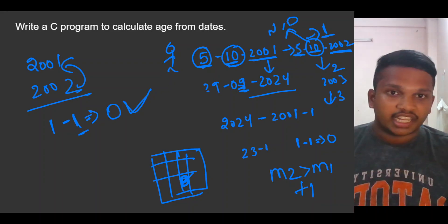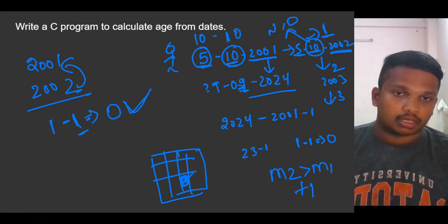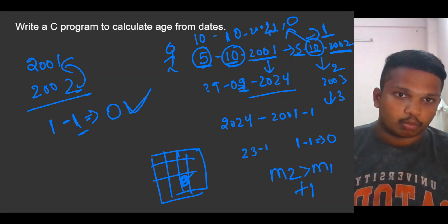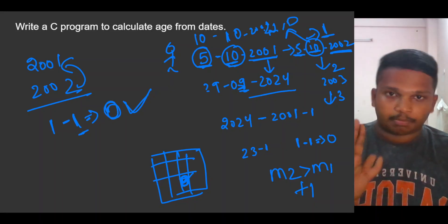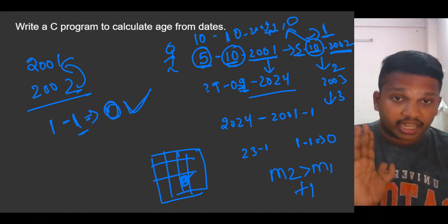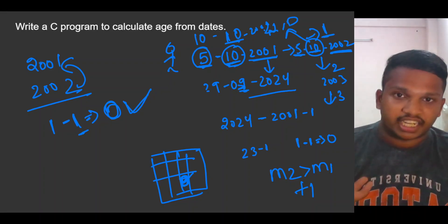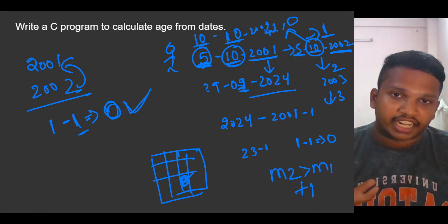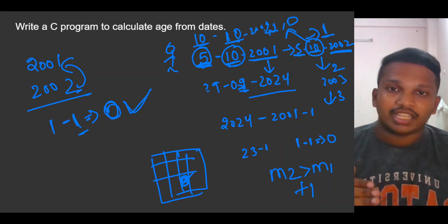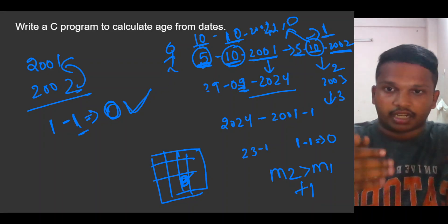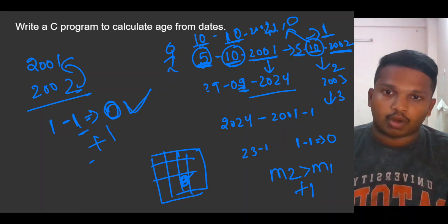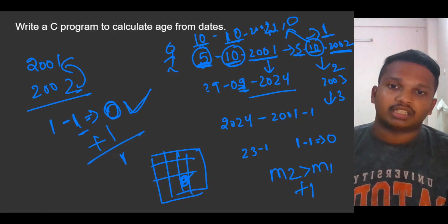For example, if he is on 10th October 2002: 2002 minus 2001 minus one gives zero as present age. Now check the month — it is matching. Then check the date: 10 is greater than 5, so he is crossing his birth date. Increment by one, then the answer is one.